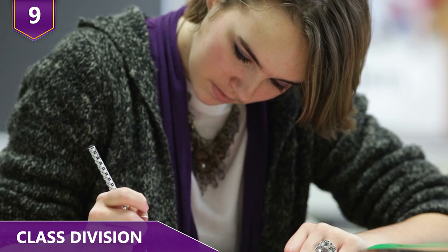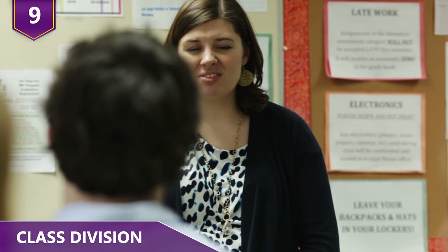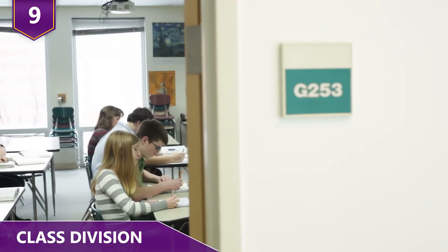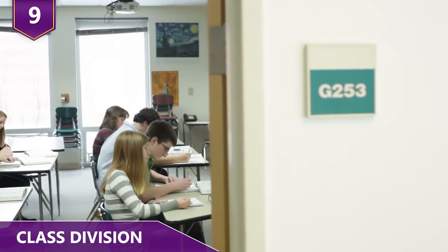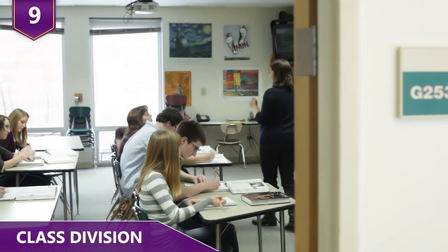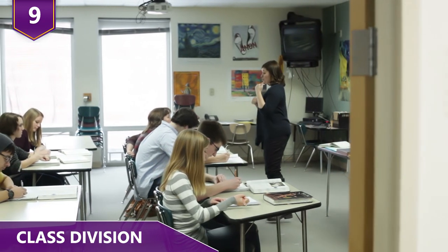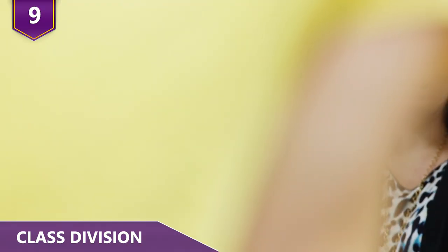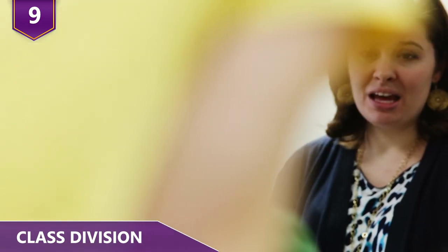The next day, Elliott reversed the roles in the classroom — now she told the brown-eyed group they were superior. This time, results were slightly different. As they knew what it felt like to be discriminated against, the brown-eyed children were more sensitive to the suffering of the other group. Jane Elliott's exercise is controversial still to this day, and sometimes it's cited as a landmark of social science.